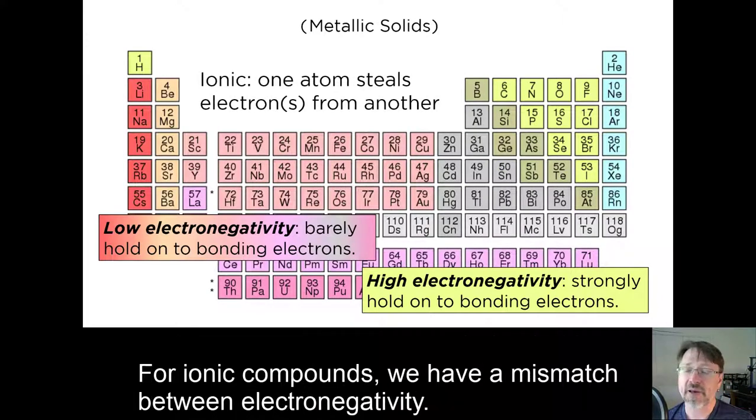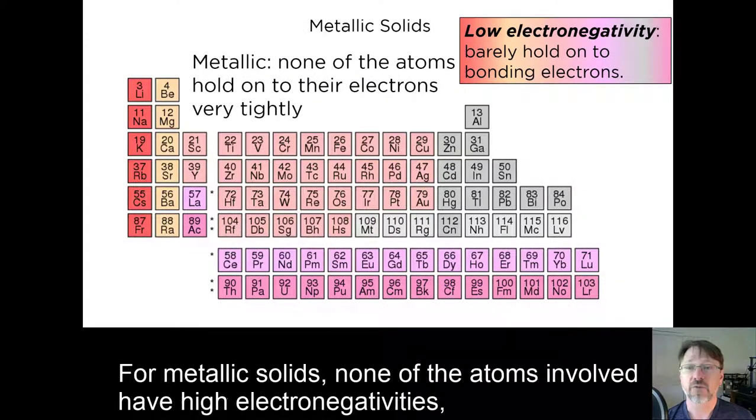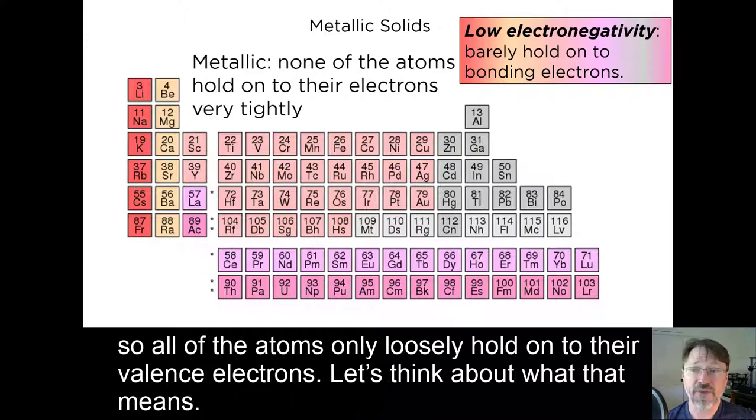For ionic compounds, we have a mismatch between electronegativity. On one side, we have highly electronegative atoms which steal electrons away from atoms with low electronegativity. For metallic solids, none of the atoms involved have high electronegativities, so all of the atoms only loosely hold onto their valence electrons. Let's think about what that means.